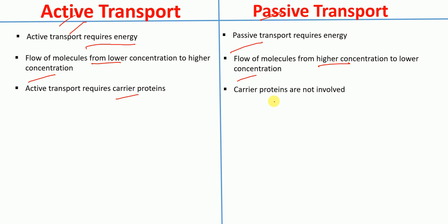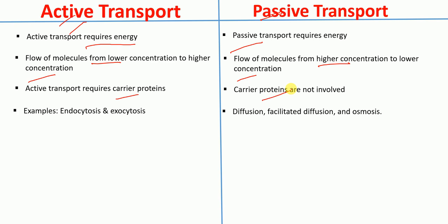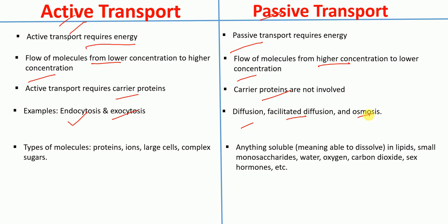Active transport generally requires carrier proteins, whereas passive transport does not require carrier proteins in general. Examples of active transport include endocytosis and exocytosis, whereas examples of passive transport include diffusion, facilitated diffusion, and osmosis.